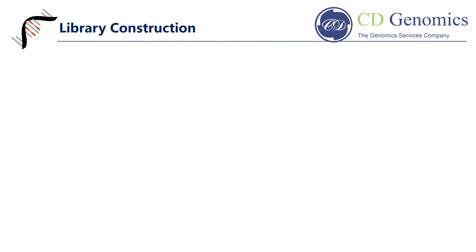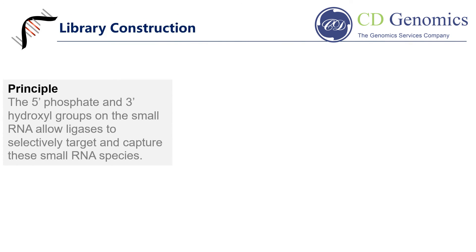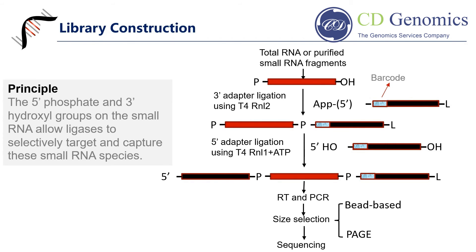The 5'-prime phosphate and 3'-prime hydroxyl groups on the small RNA allow ligases to selectively target and capture these small RNA species. Small RNA library construction typically starts with the ligation of preadenylated DNA adapter to the 3' end of the small RNAs, by using a truncated version of T4 RNA ligase 2, followed by the ligation of an RNA adapter to their 5' end using T4 RNA ligase. After this ligation, the products can be easily reverse transcribed into cDNA and amplified. Appropriate size sequences are then recovered by bead-based size selection or PAGE purification for deep sequencing.